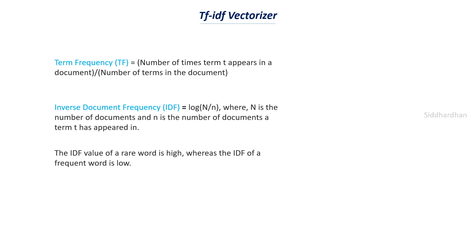The reason we have inverse document frequency is that there can be words like articles — words like 'is', 'are', 'the', 'a', etc. — that would be repeated a lot of times, and we don't want to give significant focus to these words. If a word is repeated a lot of times, it will have a small IDF value, which tells the machine learning model that word is not significant. Both the TF and IDF values are multiplied together to get the TF-IDF value. Each term has this TF-IDF value, and this forms feature vectors representing numerical values. This is how we can convert text data to numerical data.